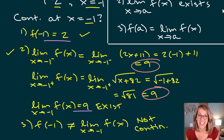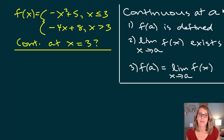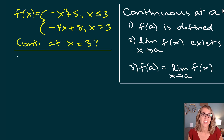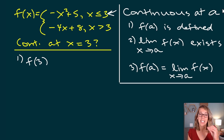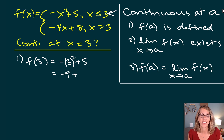Now let's do an example of a function that is continuous. We have another piecewise function: f(x) = -x² + 5 if x ≤ 3, and -4x + 8 if x > 3. We'll test continuity at x = 3. Step one: f(3) uses the first piece since it covers x ≤ 3. That gives -3² + 5 = -9 + 5 = -4. The function is defined there — condition one is satisfied.